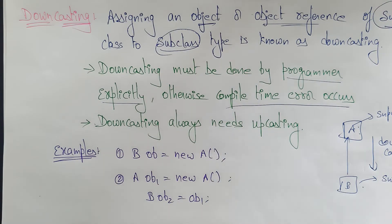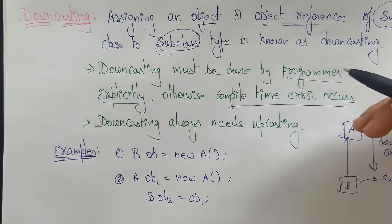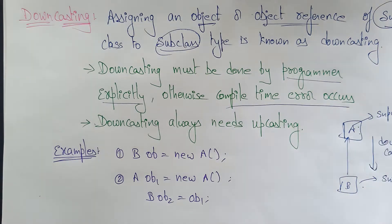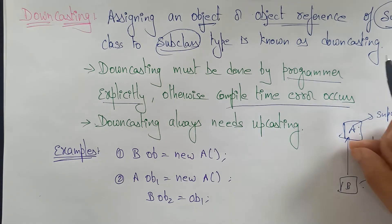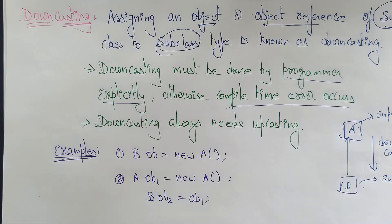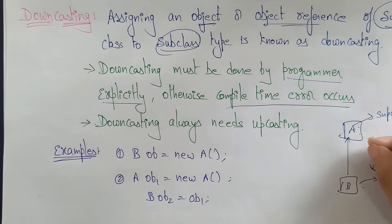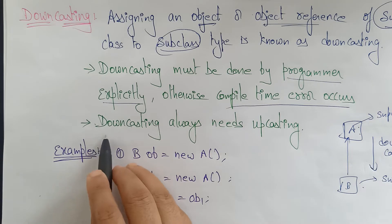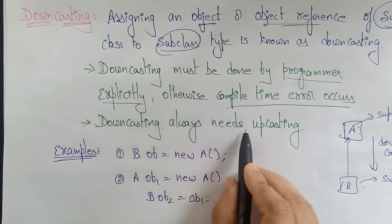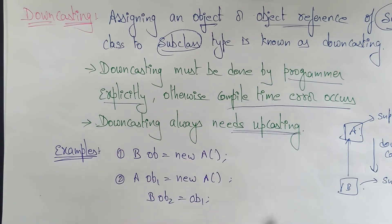Be careful while you are performing downcasting. Assigning an object or object reference of superclass to subclass requires performing downcasting explicitly, otherwise a compile-time error occurs. Also, downcasting always needs upcasting — it definitely needs an upcasting, otherwise an error also occurs.